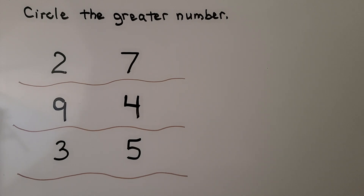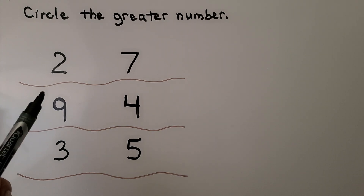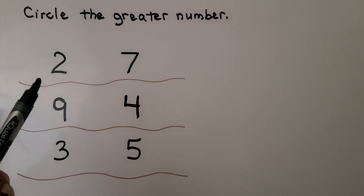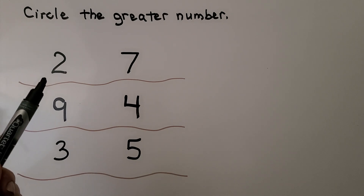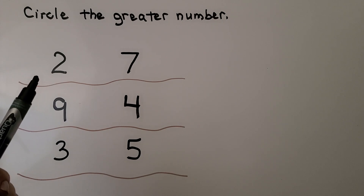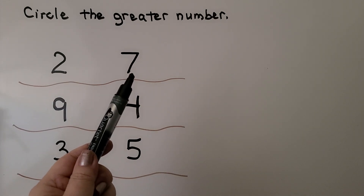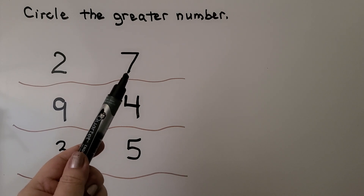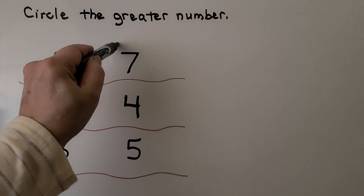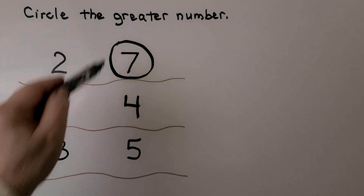We can think about counting order. The greater number comes after in counting order, and greater means more. When we count — one, two, three, four, five, six, seven — we say two, and then we say seven after that. So the greater number comes after. Seven is the greater number.